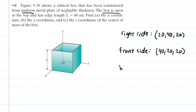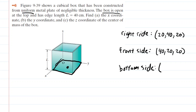Next, we look at the bottom side. We outline it, mark the geometrical center, and find the coordinates. Starting at the origin, we go halfway up the X-axis — that's 20 — then halfway up the Y-axis — another 20 — and we go nowhere on the Z-axis because we're lying on the X-Y plane. So the coordinates are 20, 20, and 0.